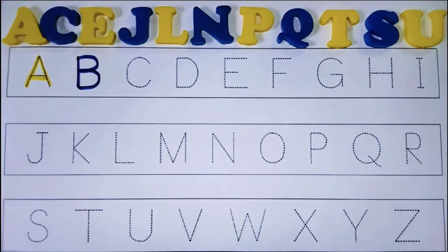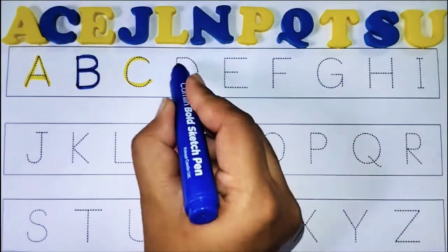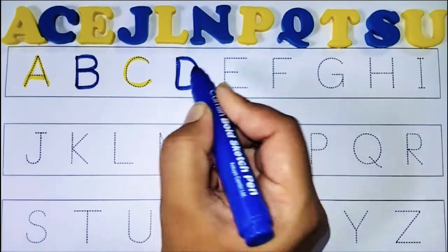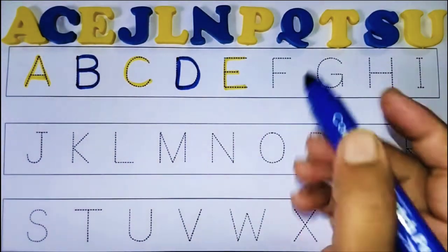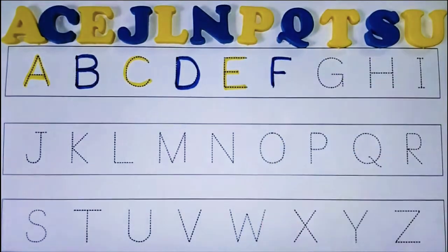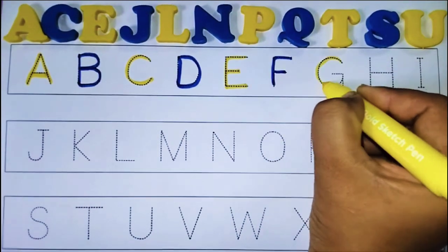C, C for car. D, D for doll. E, E for elephant. F, F for fish. G, G for god.